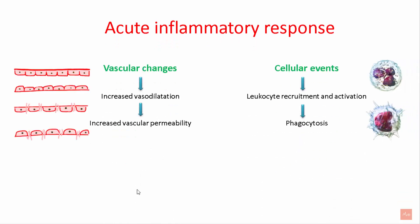The vascular changes involve increase in vasodilation and increased vascular permeability. In inflammation, there is an increase in the diameter of the blood vessel causing vasodilation. There is also increased vascular permeability, which causes plasma proteins and fluids to come out of the lumen into the interstitial tissues.